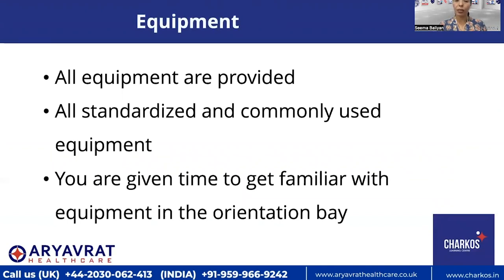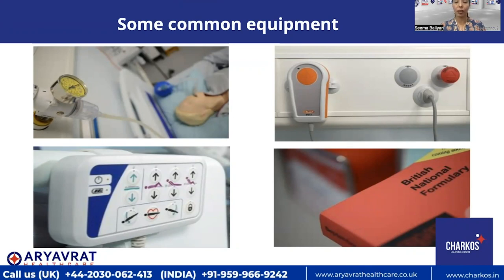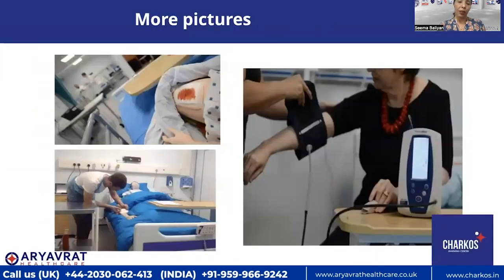Regarding equipment, all of the equipment will be provided, including stationery, and they are all standard and commonly used equipment. You will be given some time to get familiar with the equipment in the orientation bay as well. Common equipment you will see includes an oxygen line, a call bell, bed controls, and the BNF in case you require help with medication. You can also see mannequins with wounds and other procedures that represent what you can expect to be doing in the exam.